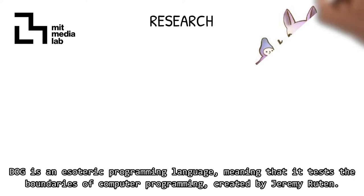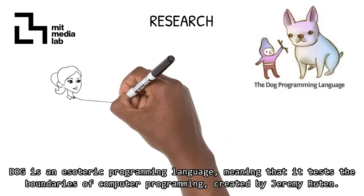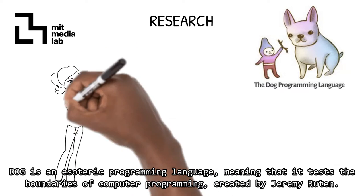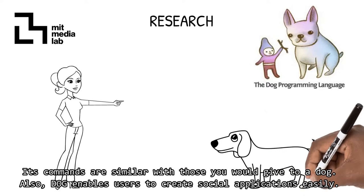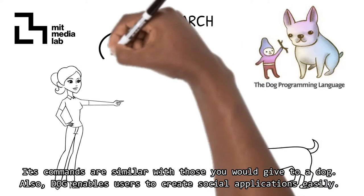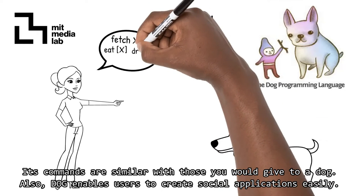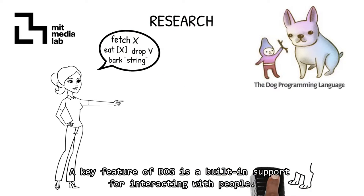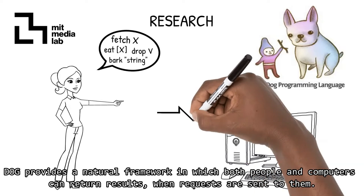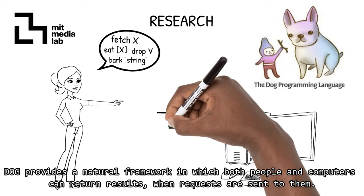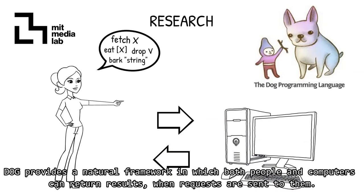Dog is an esoteric programming language, meaning that it tests the boundaries of computer programming, created by Jeremy Rudim. Its commands are similar to those you would give to a dog. Also, Dog enables users to create social applications easily. A key feature of Dog is built-in support for interacting with people. Dog provides a natural framework in which both people and computers can return results when requests are sent to them.